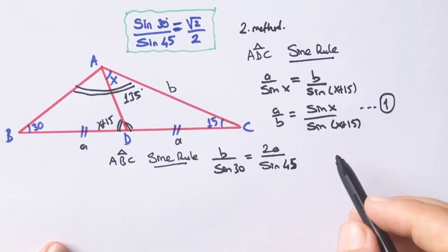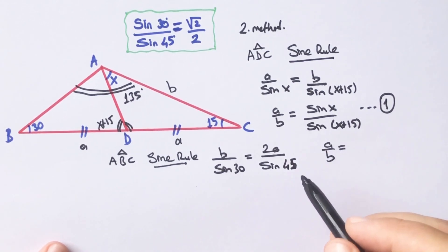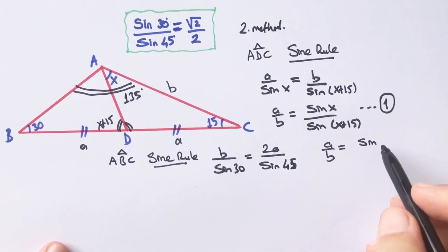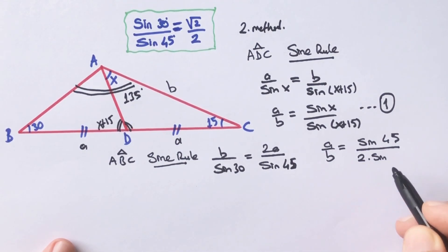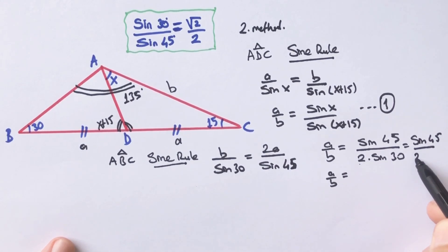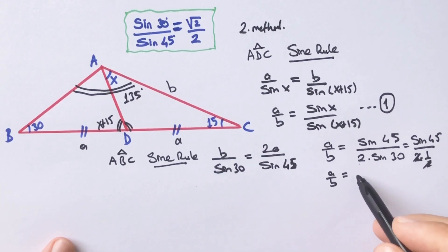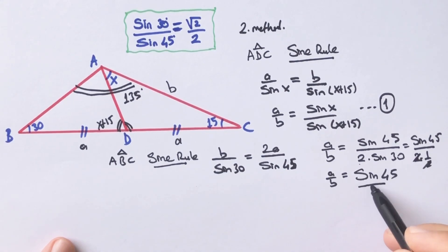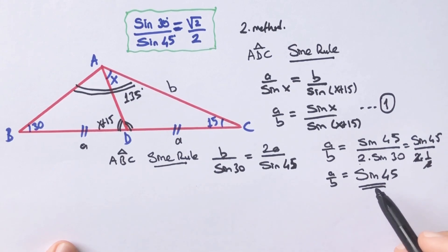Therefore a over b must be equal to sine 45 over 2 times sine 30. So a over b equals sine 45 over 2 times sine 30, which equals 1 over 2. That means a over b equals sine 45. This is the second equation.